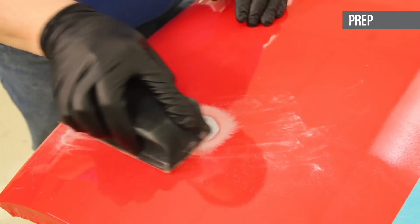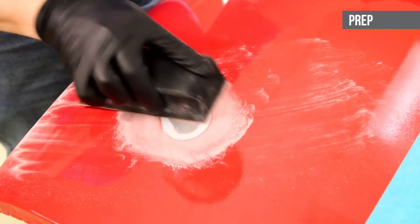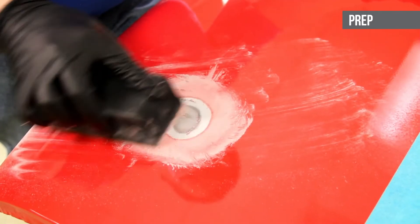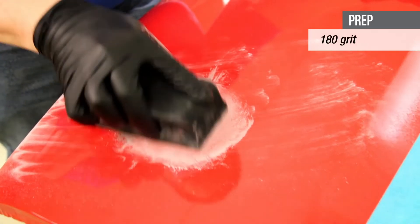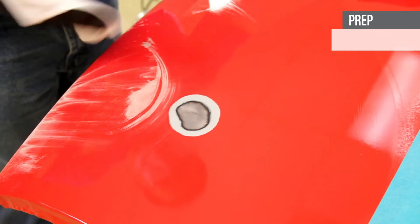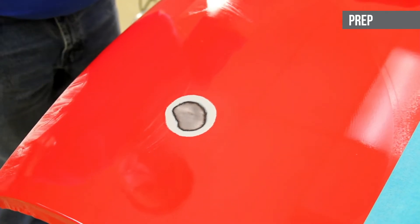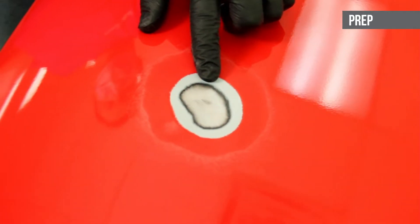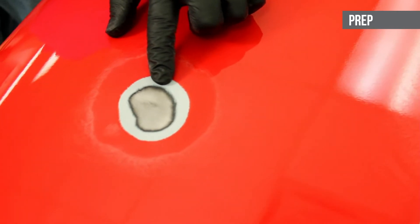Feather edge or blend the sanded area into the painted area with 180 grit sandpaper. Remove dust and clean the area. The surface must be completely clean and dry before applying the body filler.